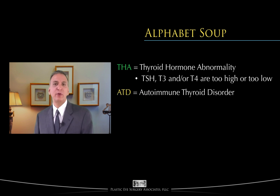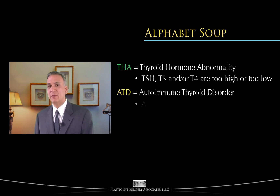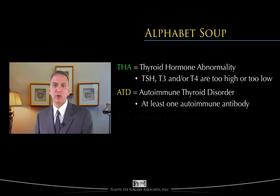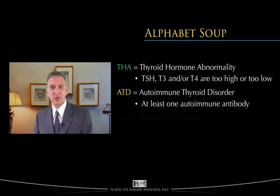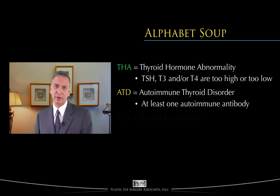ATD stands for Autoimmune Thyroid Disorder. This means that a person has at least one autoimmune antibody affecting thyroid hormone production. In previous videos, we discussed thyroid hormone production, conversion of thyroid hormone T4 to T3, and the TSH receptor. There are many steps in this process that can be, and are, interrupted by autoimmune antibodies.